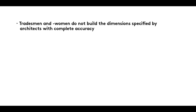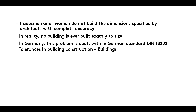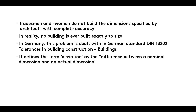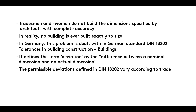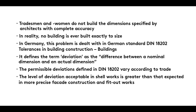Summary: Tradesmen and women do not build the dimensions specified by architects with complete accuracy. In reality, no building is ever built exactly to size. In Germany, this problem is dealt with in German Standard DIN 18202, Tolerances in Building Construction: Buildings. It defines the term deviation as the difference between a nominal dimension and an actual dimension. The permissible deviations defined in DIN 18202 vary according to trade. The level of deviation acceptable in shell works is greater than that expected in more precise facade construction and fit out works.